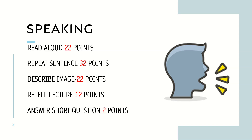Answer short question is worth 2 points and you will get 7 to 8 questions in the real PTE exam. Only vocabulary is tested — if you speak and your answer is correct, you get points; a wrong answer gets zero. There is no negative marking in the speaking section. These five modules use partial scoring — if you speak at all you get points, but if you don't speak you get zero.